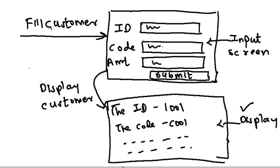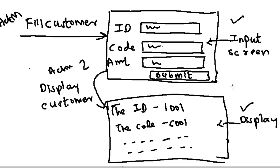We will have two actions. The first action is FillCustomer — anybody who hits our MVC project via the FillCustomer action will invoke the input screen. The user fills the data and hits the submit button, which triggers the second action: DisplayCustomer, which invokes the display screen. So we will have two views and two actions in the controller.